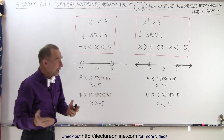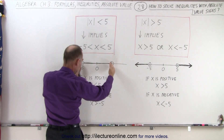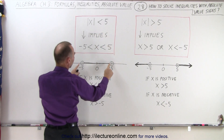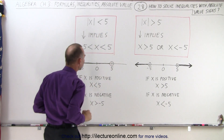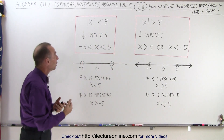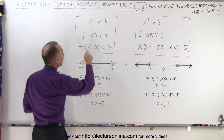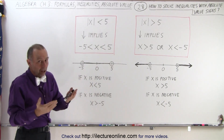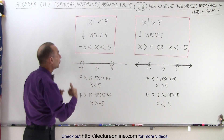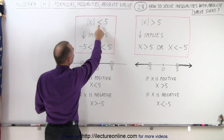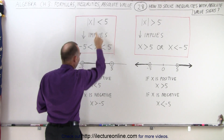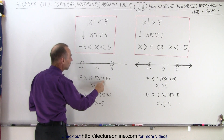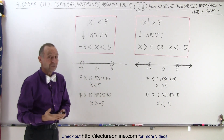If we then graph that, you can see that it's clearly between those two values. Since there's no equal sign here, it does not include the endpoints. If x is a positive value, then the absolute value of a positive value is still positive, and so that positive value must be smaller than 5. So if x is a positive value, then x must be less than 5.